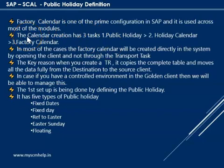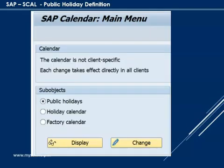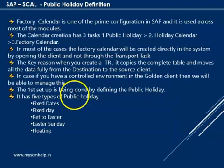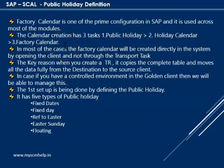Factory calendar creation has three things. First we have a public holiday, then a holiday calendar, and then the factory calendar — it goes in a sequence. So first we have to create the public holiday, then attach it to a holiday calendar, and then we will be creating the factory calendar.